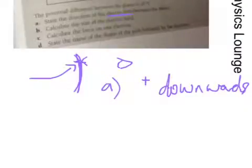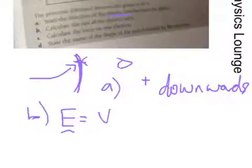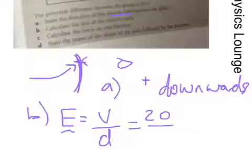Part B is asking us the size of the electric field. So in other words, this is the electric field strength E. There's a couple of formulas for it: the force per charge, or the voltage per distance, or volts per meter. And that's more useful in this case because we've got a voltage of 20 volts, and we've got a distance of separation of the plates of 0.04 meters. Remember, it's given as 4 centimeters, but 0.04 meters is what we're after.